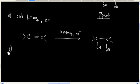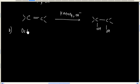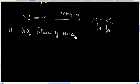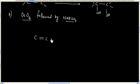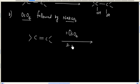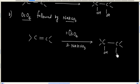We can also use another reagent: osmium tetraoxide, followed by sodium bisulphite. In this case, again, we will have glycol formation. So the carbon-carbon sigma bond does not break.